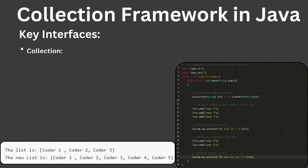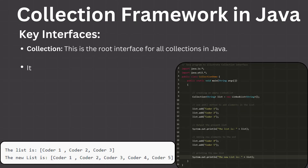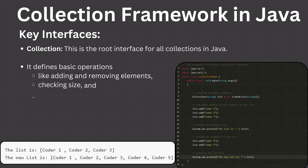Key Interfaces. Collection: This is the root interface for all collections in Java. It defines basic operations like adding and removing elements, checking size, and iterating over elements.